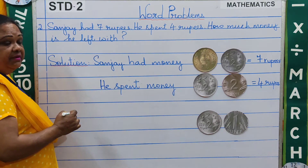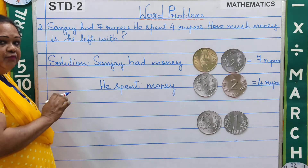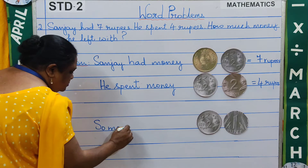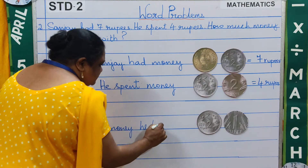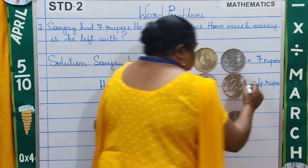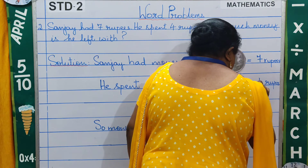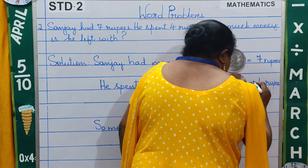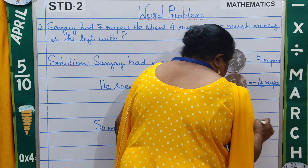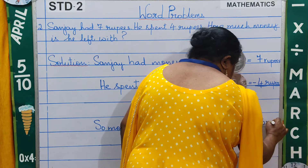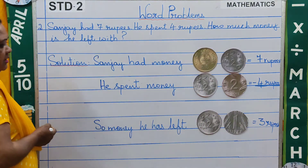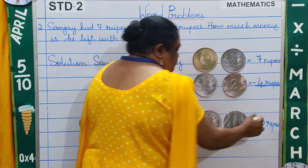So how much money is left with him now? He had 7 rupees, he spent 4 rupees — how much money is left with him? We will subtract. 7 minus 4 is equal to 3 rupees. He has 3 rupees left.